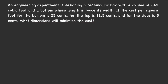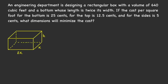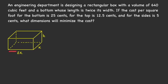Let's draw a picture of the box that we want to manufacture. We want a box with a bottom base whose length is twice its width. If we let the width equal x, then our length will equal 2x, and let's say the height of this box is equal to h.